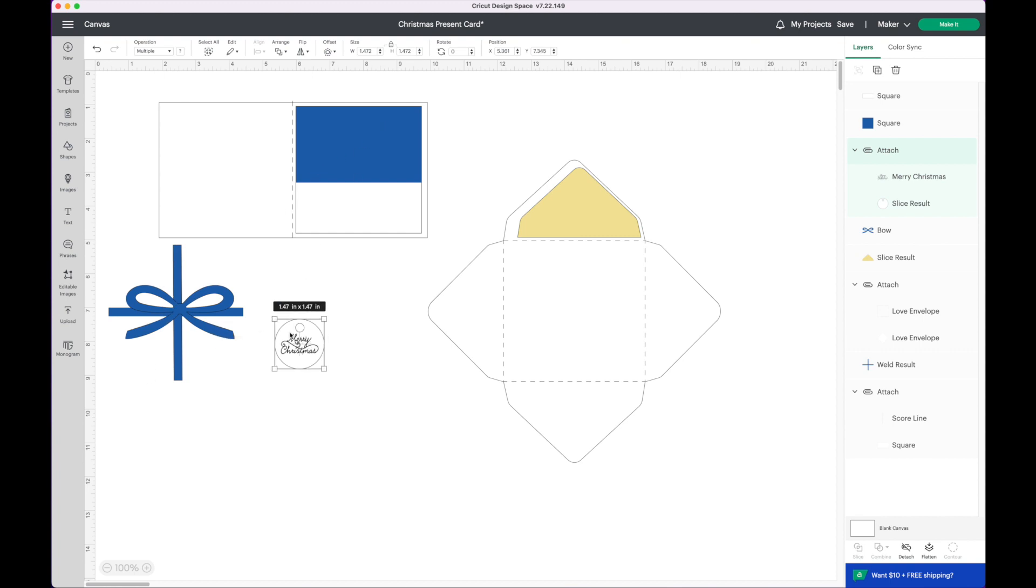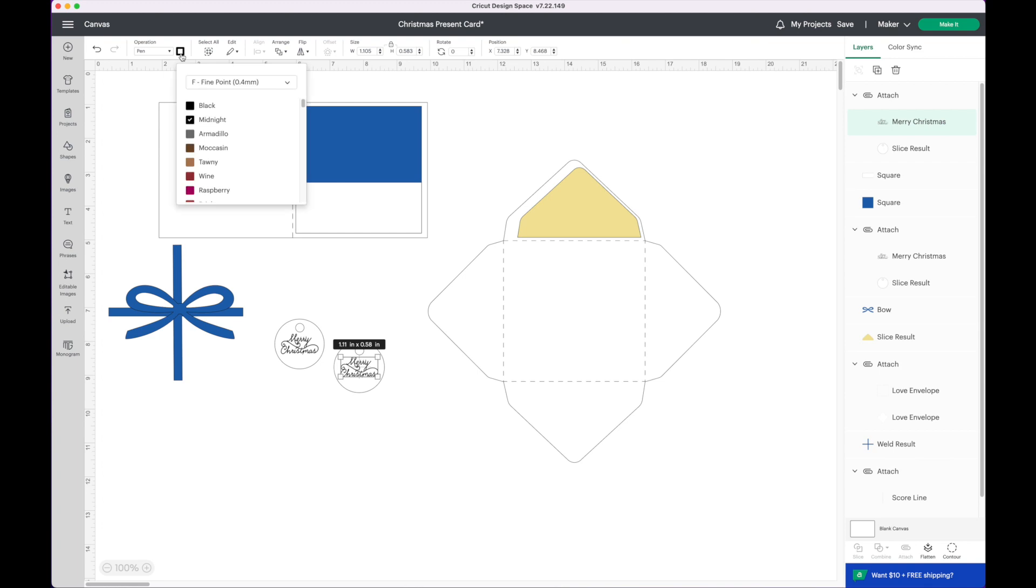Now we have this little tag. I'm gonna right click on this and choose duplicates. Now I have two of them. So if I click on this and go to my right hand side layers panel we will see we have the two objects here. I'm gonna click on the text. If you go to the upper left hand corner you will see the operation type is set to pen. I'm going to change that color and make it be a raspberry color.